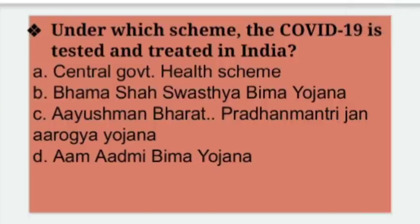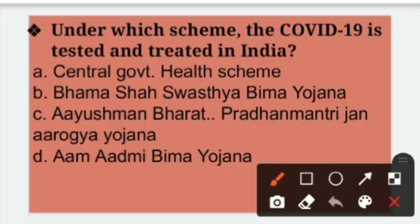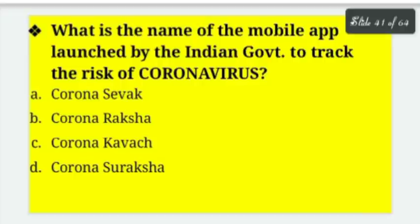Under which scheme is COVID-19 tested and treated in India — India mein kis scheme ke under COVID-19 ko test aur treat kiya gaya? Options: Central Government Health Scheme, Bhamashah Swasthya Bima Yojana, Ayushman Bharat Pradhan Mantri Jan Arogya Yojana, Aam Aadmi Bima Yojana. Right answer is option C — Ayushman Bharat Pradhan Mantri Jan Arogya Yojana.